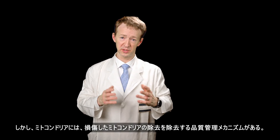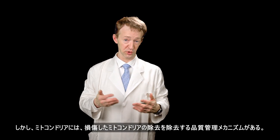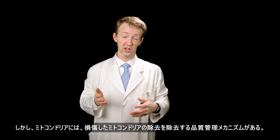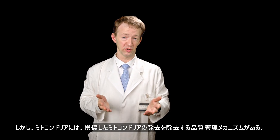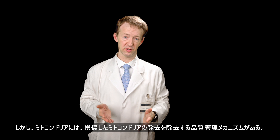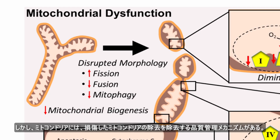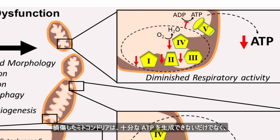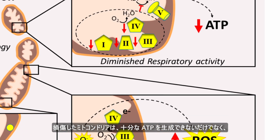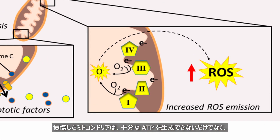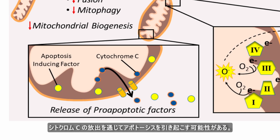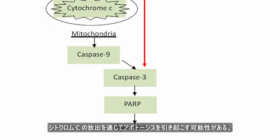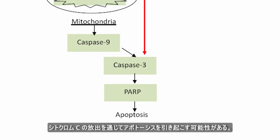However, mitochondria possess quality control mechanisms that trigger removal of damaged mitochondria. Damaged mitochondria not only fail to produce enough ATP, but can also trigger apoptosis through release of cytochrome C.